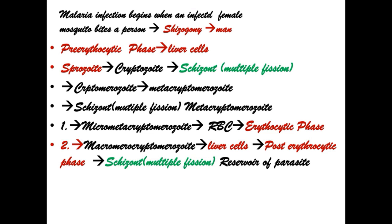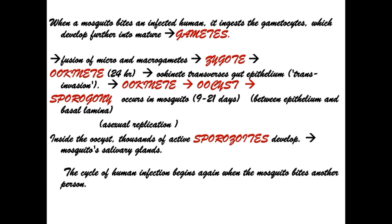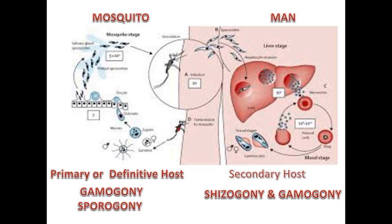Malaria infection begins when an infected female mosquito bites a person. In the mosquito, gametes form, a zygote is formed, then an ookinete, which changes into an oocyst. Sporogony occurs inside the oocyst, producing thousands of active sporozoites released into the salivary glands. The mosquito is the primary or definitive host, where gametogony and sporogony take place. Humans are the secondary host, where schizogony and gametogony take place.